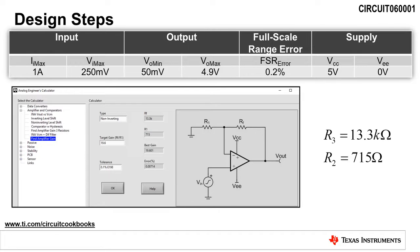Next, we need to determine the resistor values for R3 and R2 that correspond to a non-inverting amplifier gain of 19.6 volts per volt. One easy way to do this is to use the Find Amplifier Gain function of the analog engineer's calculator. Setting the type to non-inverting, target gain to 19.6 volts per volt, and using 0.1% resistors yields values of 13.3 kiloohms for R3 and 715 ohms for R2.